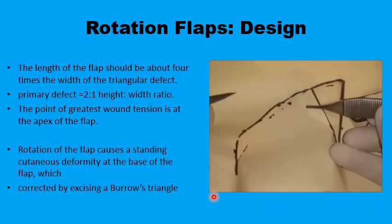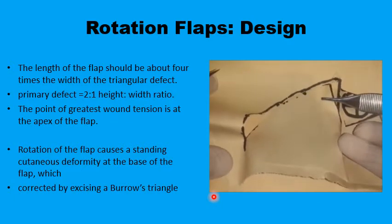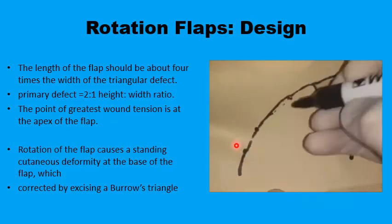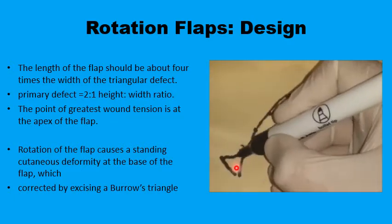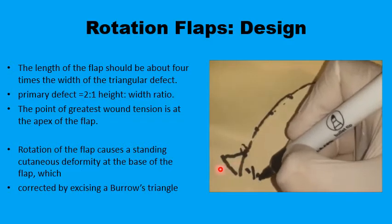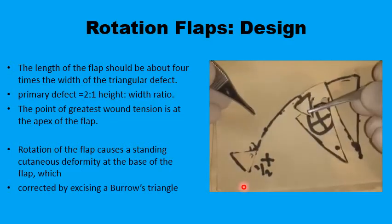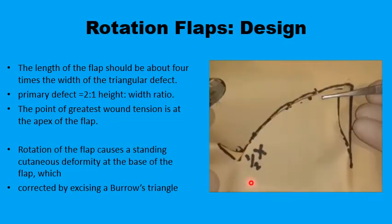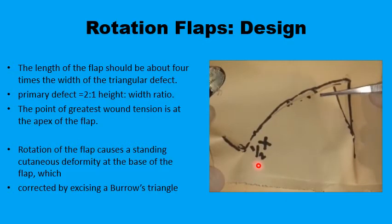While mobilizing the flap, you will notice excess tissue at the base of the curvilinear incision. You can draw a Burrows triangle — an equilateral triangle with its base about half of x — and this facilitates wound closure with no tension and no dog-ear deformity.